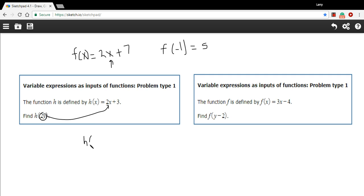So h of 2y is going to be 2. And then in place of the x, I put in a 2y and then finish my function here with the plus 3. And then we'll just simplify this. 2 times 2y is 4y. And so our answer here is just 4y plus 3.